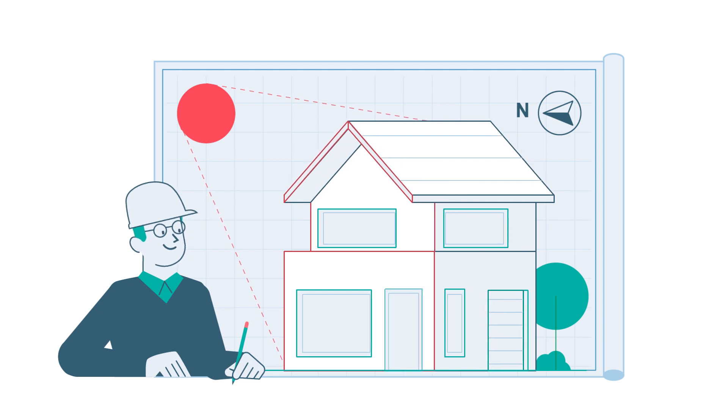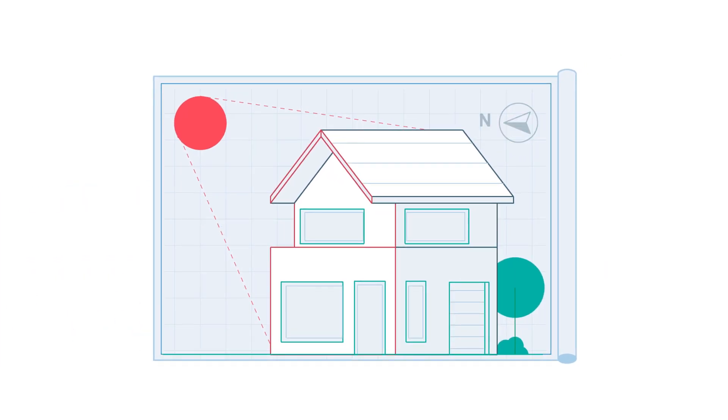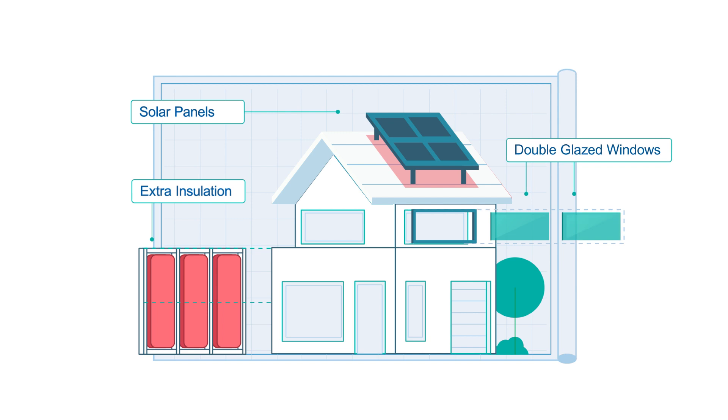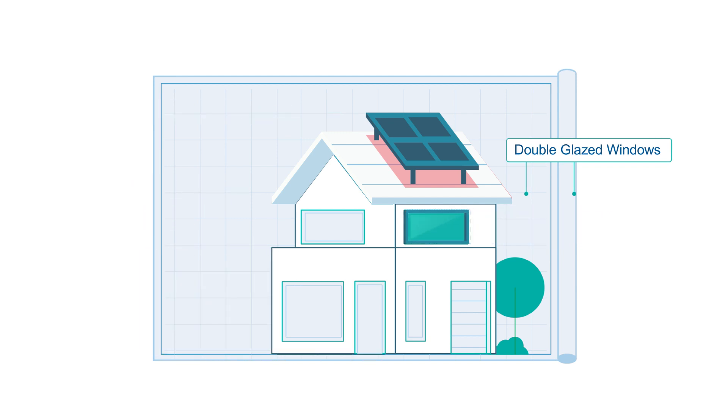They face the main living areas of the house north for winter sun, add extra insulation and solar panels, swap to double glazed windows and change the roof colour.